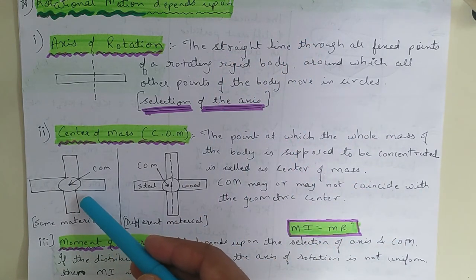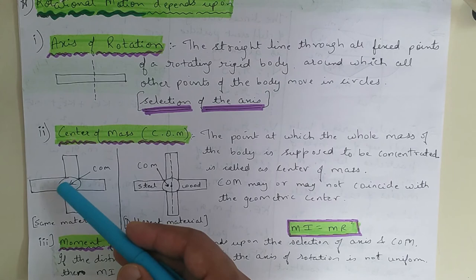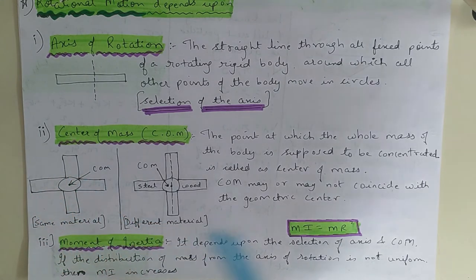For example, if I take this as an example of a fan, the rod it has - if I remove it from center of mass and pass it through another point, then I rotate the fan, will the fan rotate purely? No, it will wobble.